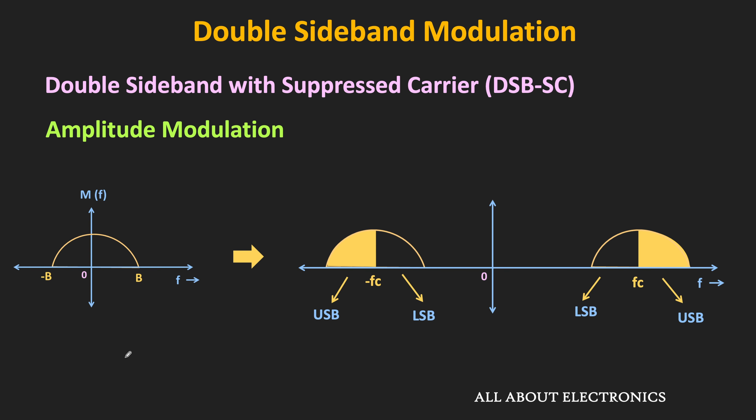In amplitude modulation, the carrier signal is also transmitted along with these two sidebands. So if the message signal has a bandwidth of B, then the modulated signal requires a total bandwidth of 2B.